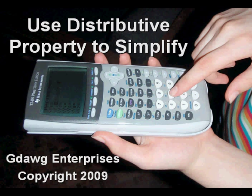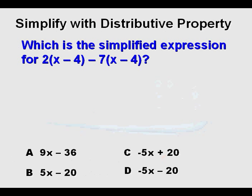Use Distributive Property to Simplify. We're going to look at a problem first, which is a simplified expression for 2 times quantity x minus 4 minus 7 times quantity x minus 4.